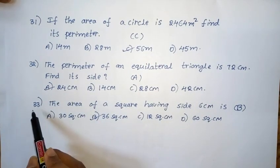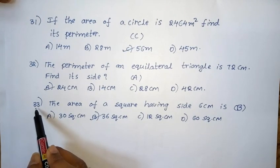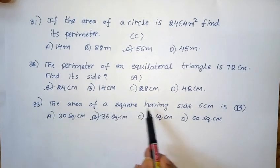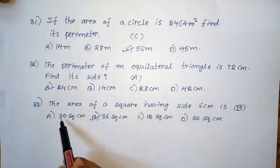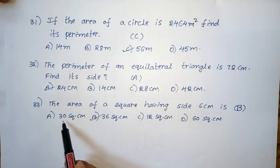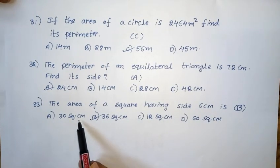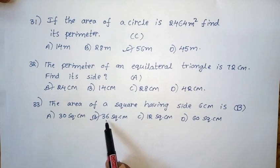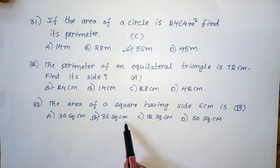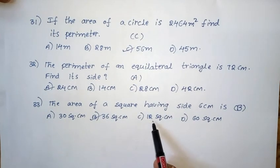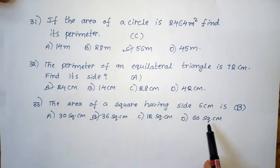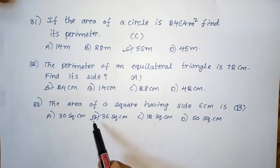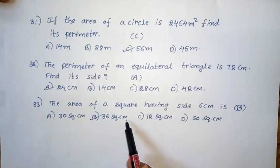Thirty-third question: The area of a square having side 6 centimeters is — Option A: 30 square centimeters. Option B: 36 square centimeters. Option C: 12 square centimeters. Option D: 60 square centimeters. The right answer is option B — 36 square centimeters.